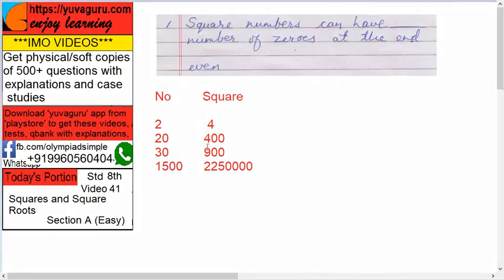Or can 90 be a square of somebody? It means there should be two zeros, four zeros, six zeros—even number of zeros. Just try it yourself: 20 square is 400, 30 square is 900.